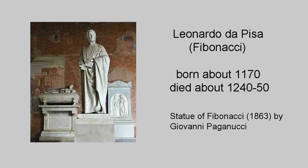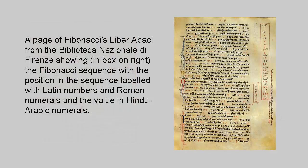Fibonacci was born in Pisa in about 1170 and died sometime between 1240 and 1250. When he was young he traveled with his father, who was a merchant and directed a trading post in Buja, in what's now Algeria. It was while in North Africa that Fibonacci learned of the Hindu-Arabic numeral system. In 1200 he returned to Pisa and used the mathematical knowledge he'd gained on his travels to write Liber Abaci, the Book of the Abacus, published in 1202, which introduced to Western Europe the Hindu-Arabic numerals and decimal number system that remain in use today.